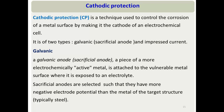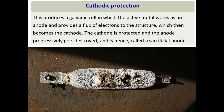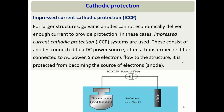In the sacrificial anode method, we attach a piece of a more electrochemically active metal (with more negative electrode potential) directly to the surface we want to protect. A galvanic cell is created in which the more active metal becomes the anode, while the protected surface becomes the cathode. The active metal provides electrons to the surface, gets oxidized, and ultimately corrodes — hence the name 'sacrificial anode.'